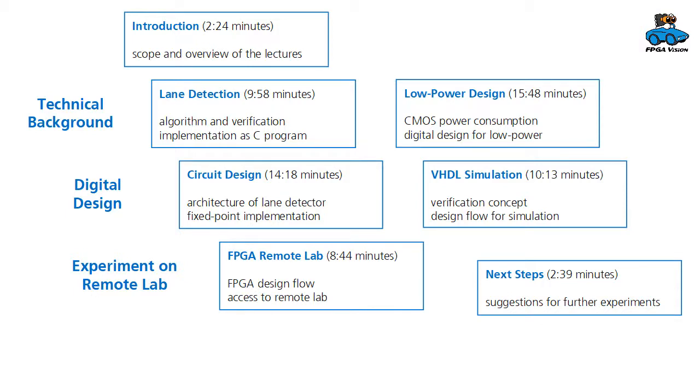Now you have seen how an algorithm works that detects lane boundaries in the street scene. I invite you to have a look at the other videos in this lecture, where you can learn how to implement such an algorithm on an FPGA and verify it. You will also have the opportunity to try out the algorithm on a remote lab. Have a look at the other lectures, and I hope you find them useful.